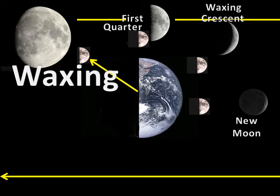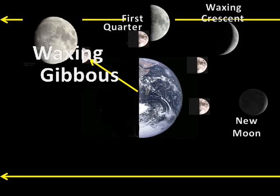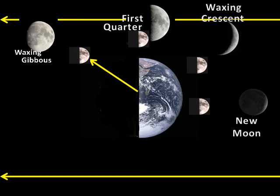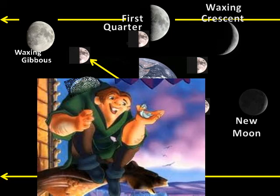The second part of this moon's name is gibbous. Gibbous is a Latin word that means hunchback. You can see in this picture of Disney's Hunchback of Notre Dame that his hunch might have the shape of a gibbous moon.